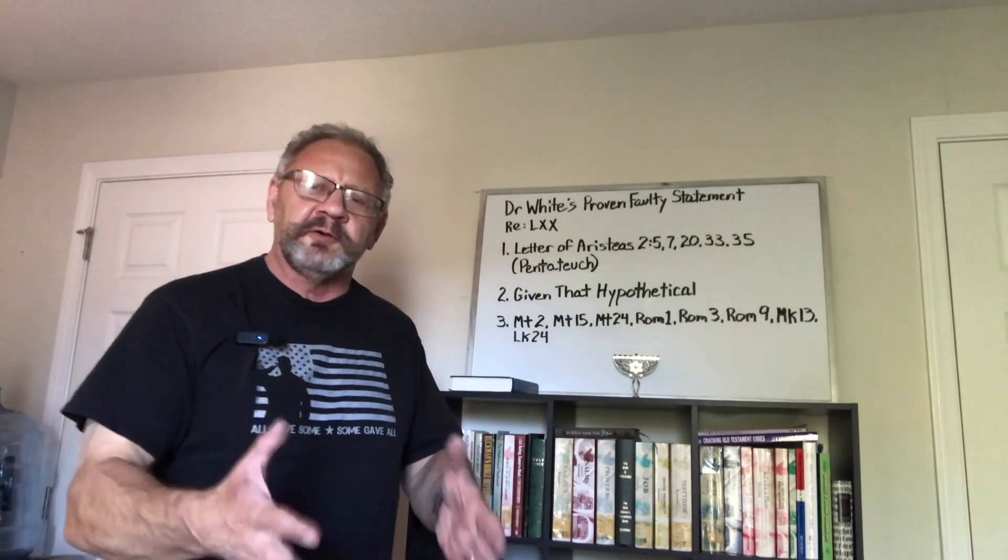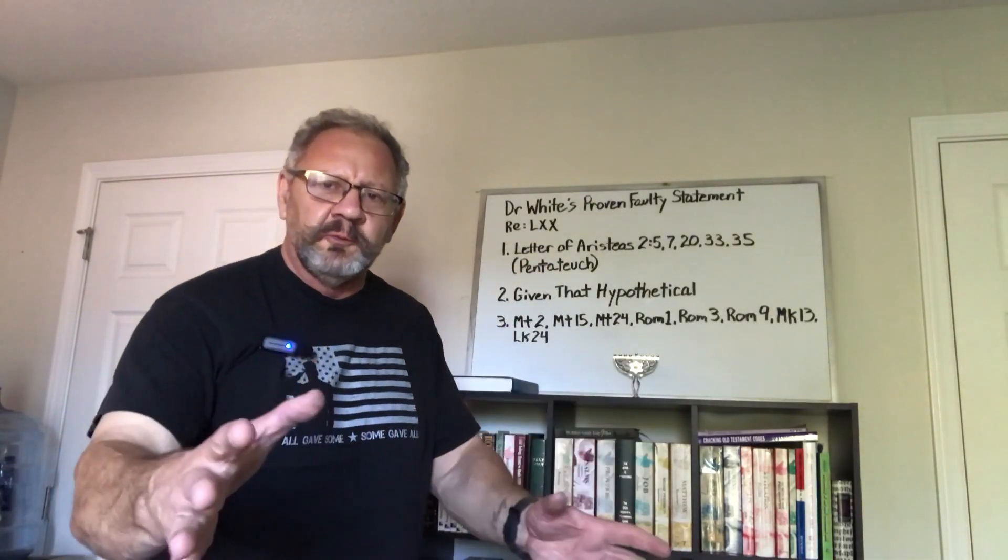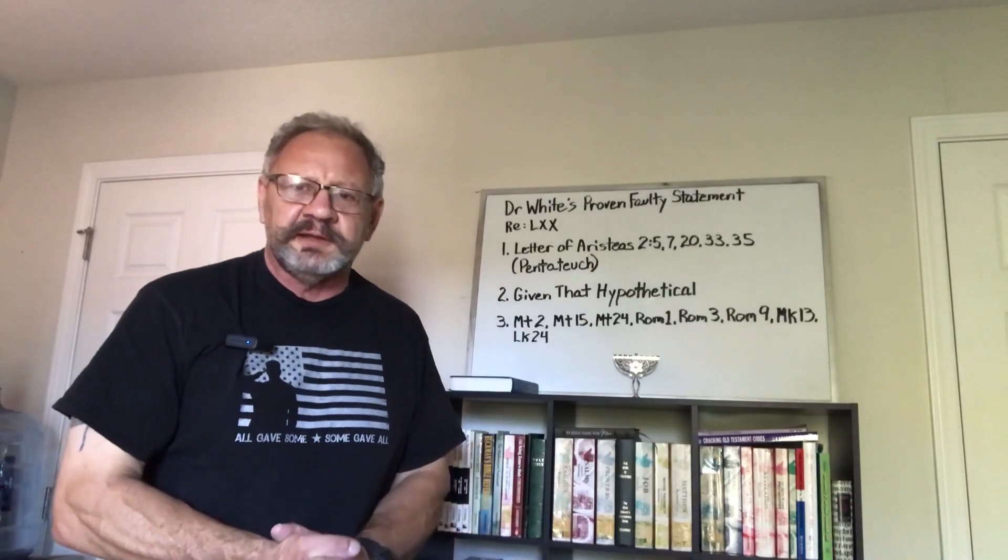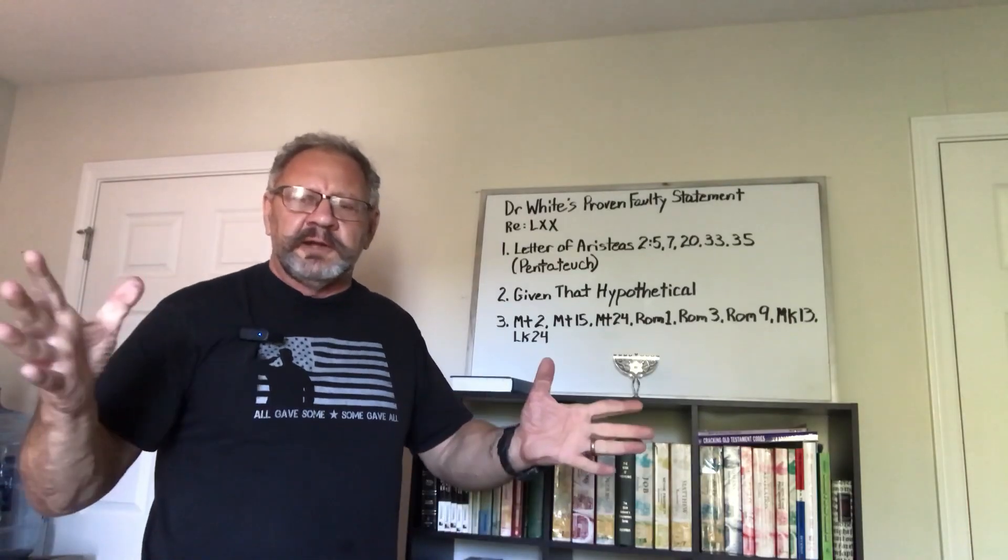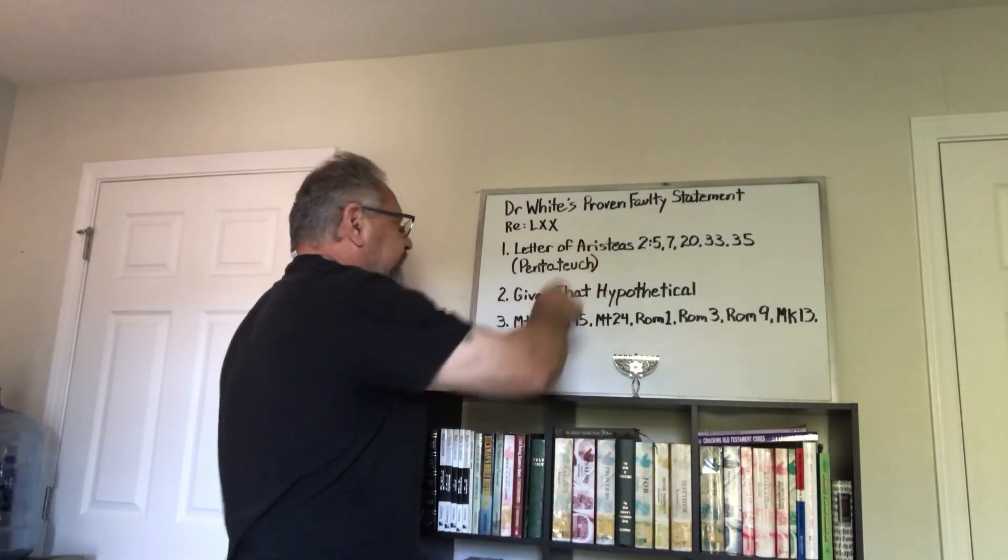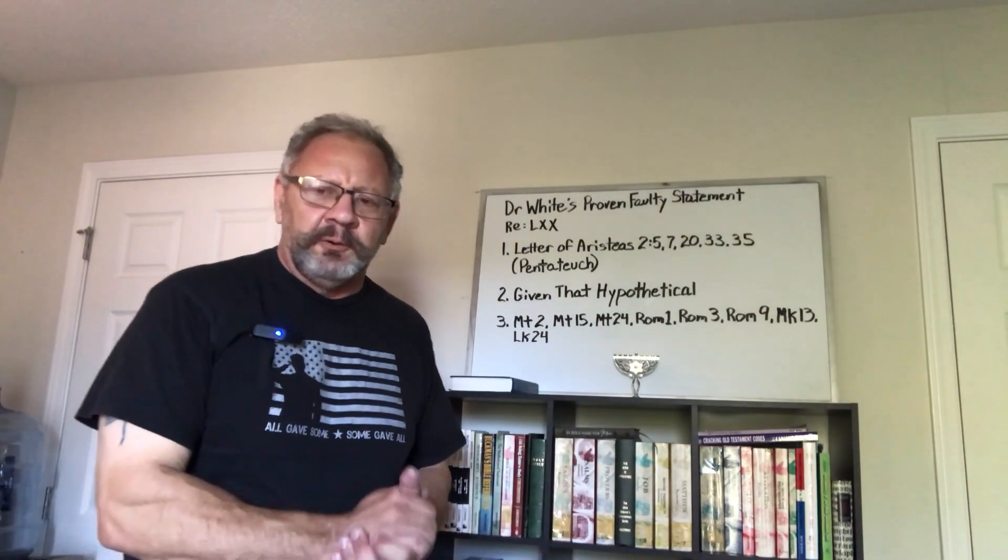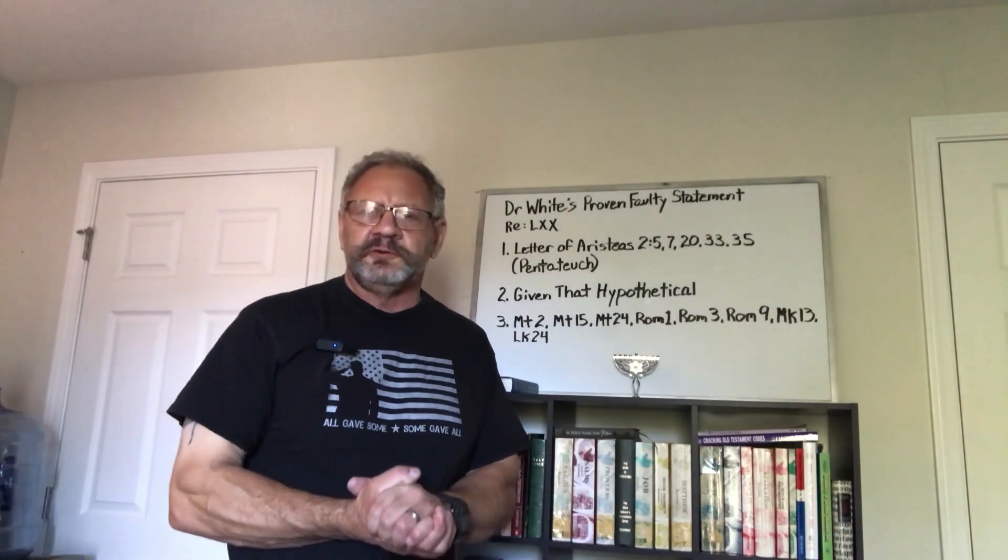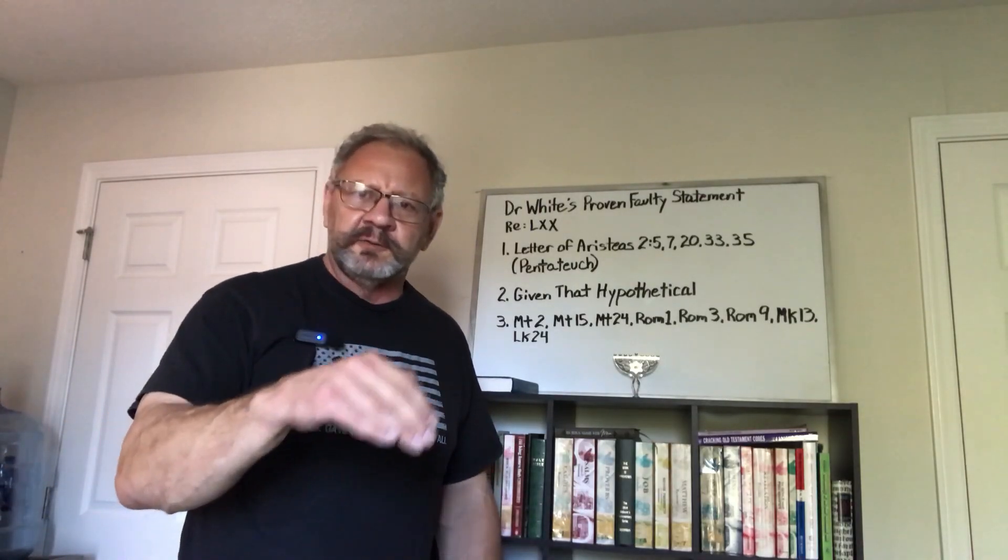In Matthew chapter 24, when Yeshua cites Daniel the prophet and the abomination of desolation and the contents of Daniel 8 to 9, when Jesus is citing or quoting from Daniel, he couldn't have been citing or quoting from the LXX or Septuagint if we accept this hypothetical that the Letter of Aristeas is true. And the same thing is true with Paul in Romans chapter 1, when Paul cites or quotes Habakkuk chapter 2, 'As it is written, the just shall live by faith,' Paul could not possibly have been quoting from the Septuagint.